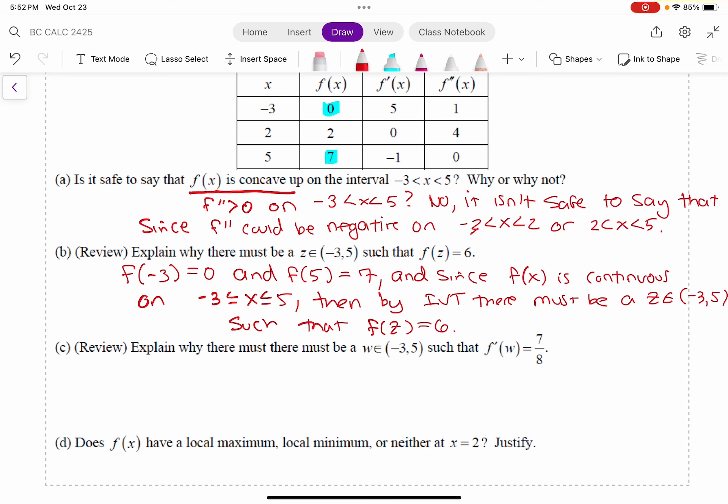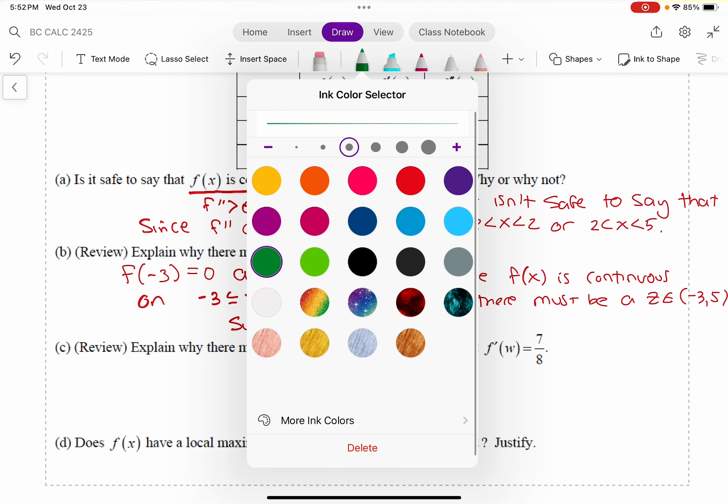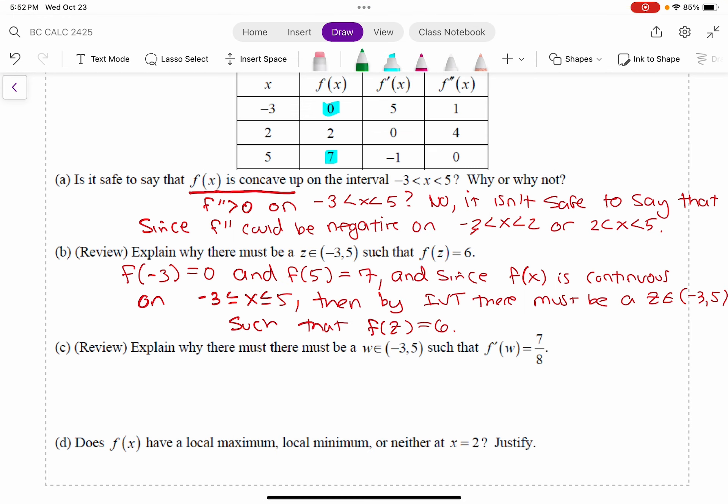Again, review, explain why there must be a w in between negative 3 and 5 such that f prime of w is equal to 7 eighths. So this is now a claim about a derivative, right? That should conjure up the mean value theorem.